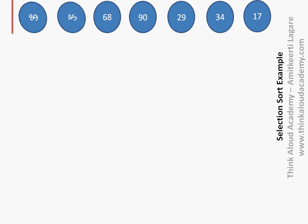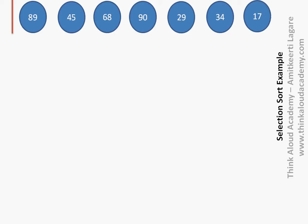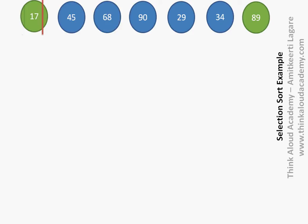First, we take the first and second elements, 89 and 45. The minimum element is 45. We then compare 45 with 68 — 45 is still minimal — then with 90, still 45. Then we compare 45 with 29, and 29 becomes the minimal. Then 29 with 34 — 29 is still minimal — and 29 with 17, and we find that 17 is the minimal element. So in the first iteration, 17 is the minimum, and we swap it with the first element, 89. So 89 goes to the right and 17 goes to the left, and we have sorted one element.